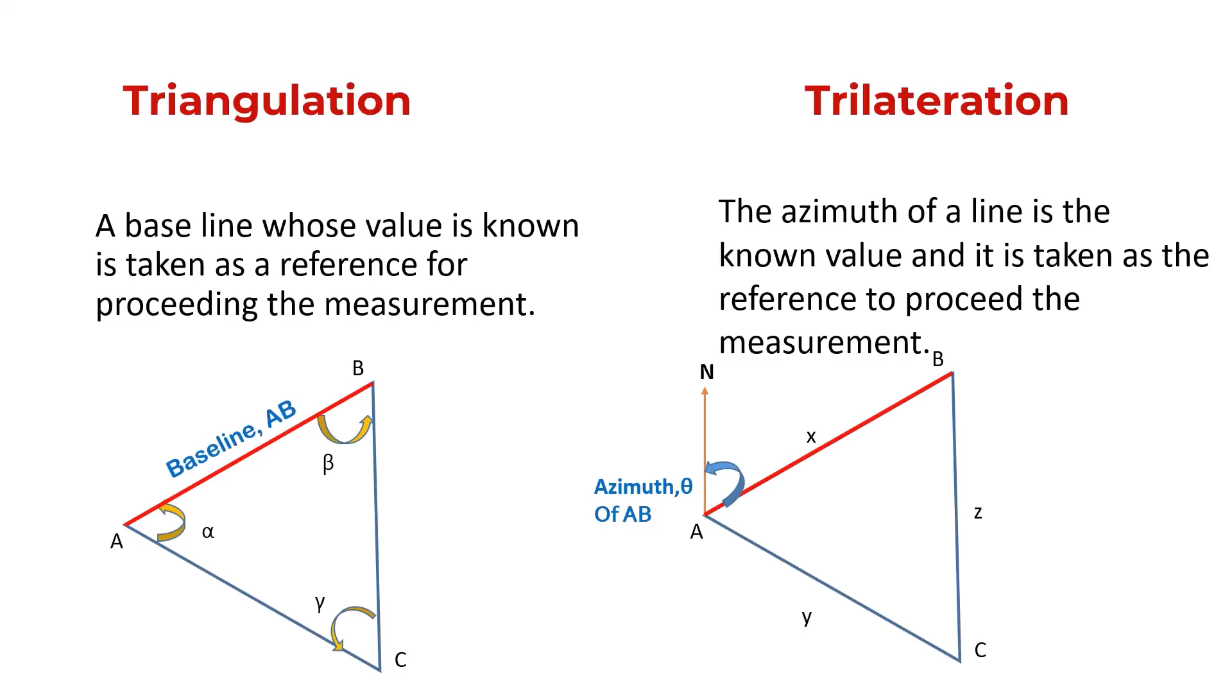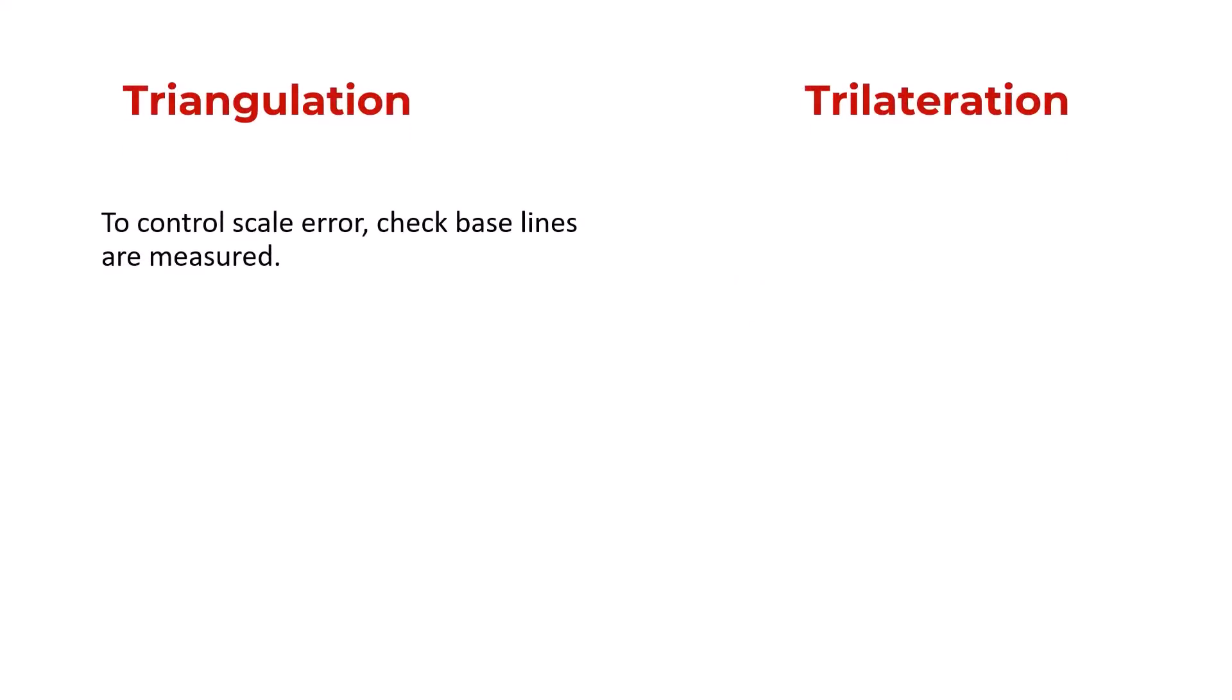To control the scale error for the overall measurement of triangulation, check baselines are measured. To control angular error, check angles are measured for trilateration.